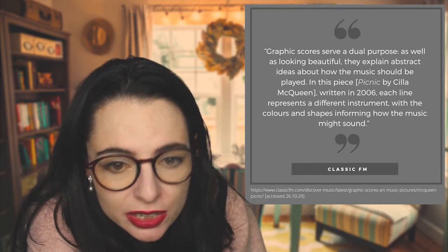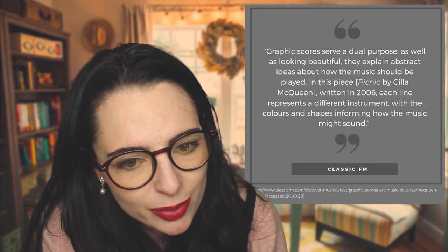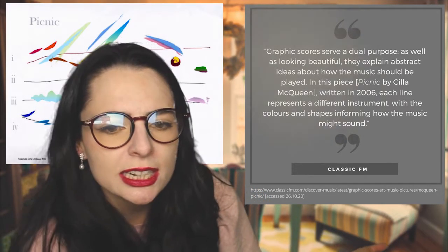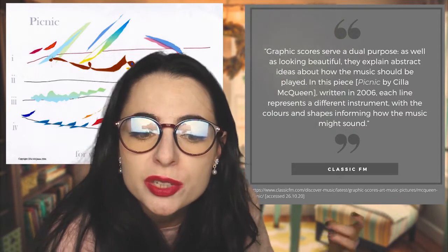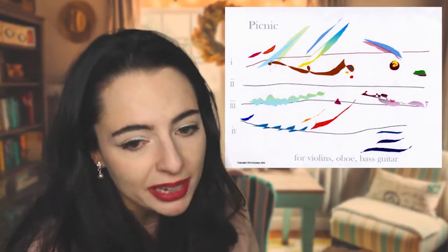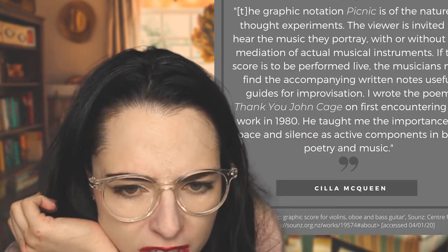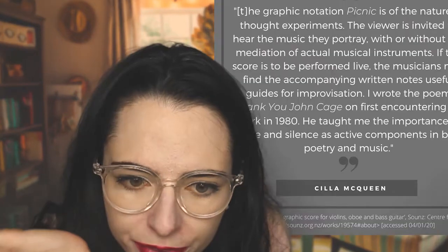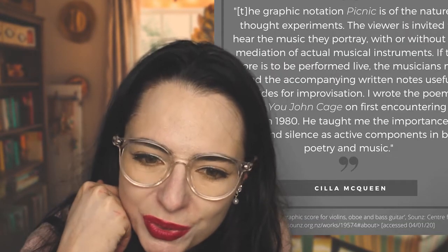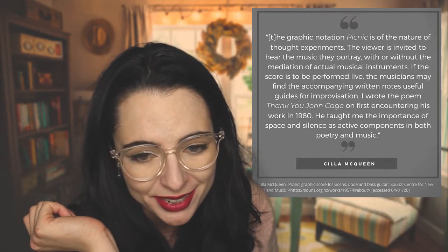Classic FM describes graphic scores as serving a dual purpose: as well as looking beautiful, they explain abstract ideas about how the music should be played. In this piece written in 2006, each line represents a different instrument, with colors and shapes informing how the music might sound. This piece is Picnic by Silla McQueen, who writes that the graphic notation is 'of the nature of thought experiments — the viewer is invited to hear the music they portray, with or without the mediation of actual musical instruments.' If the score is to be performed live, the musicians may find the accompanying written notes useful guides for improvisation.